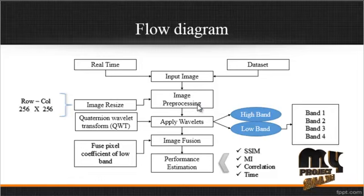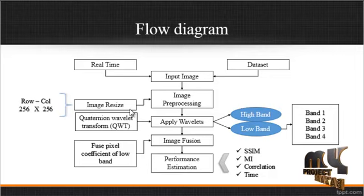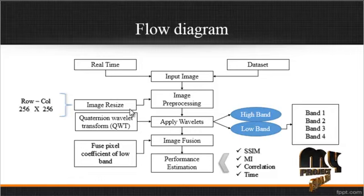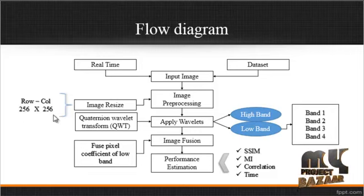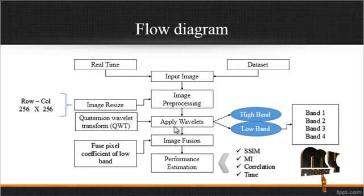In the pre-processing step, the image is scaled into a resize. Resize means scaling the pixel rows and columns into aspect ratios. Here we scale the images into 256x256 — that means in the row direction the pixels consist of 256 pixels, and in the column direction the length also consists of 256 pixels. After the image scaling, the QWT wavelet is applied.